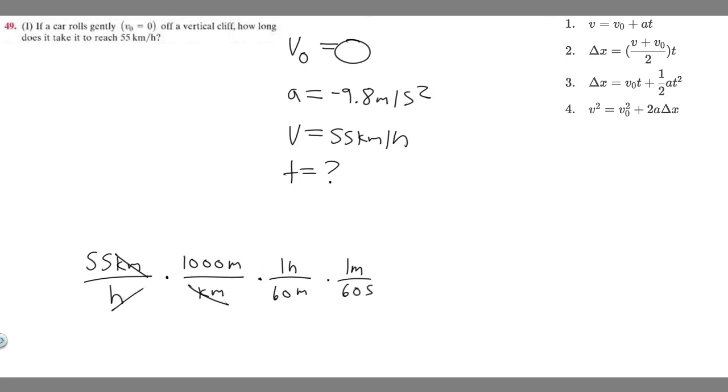So this hour cancels with this one and then this minute cancels with this minute. So we just do 55 times 1,000 times 1 over 60 times 1 over 60. So if you go ahead and do that, 55 times 1,000 is going to be 55,000. And then times 1 over 60 times 1 over 60 is going to give you 15.277, whatever it goes on.